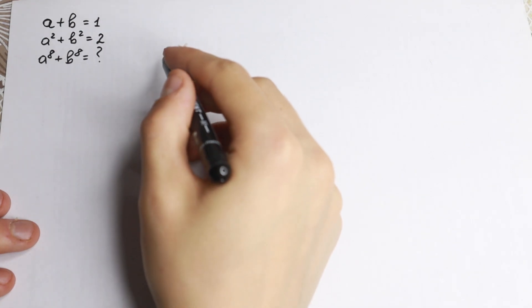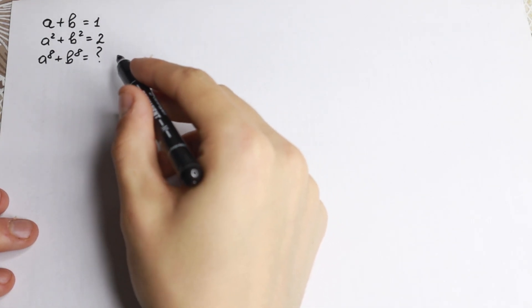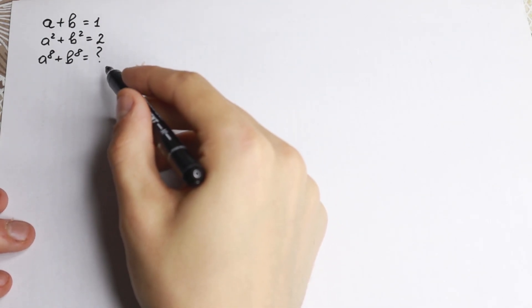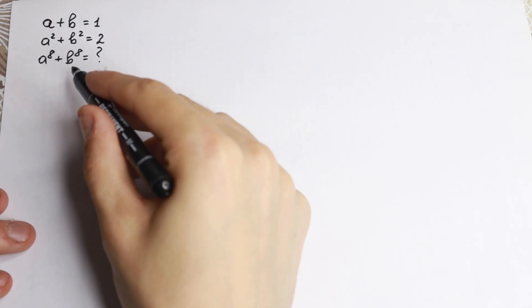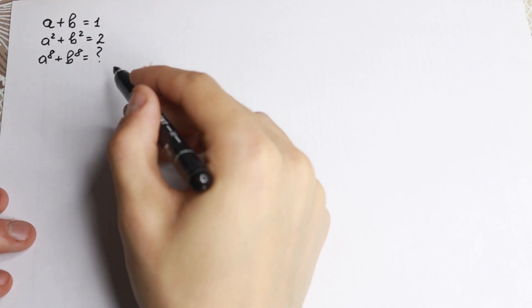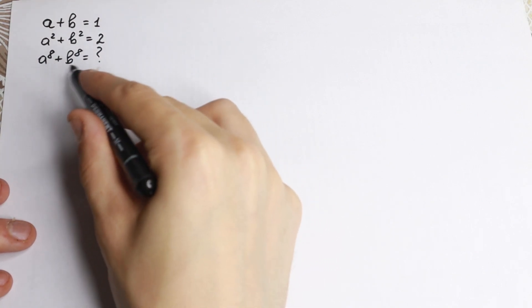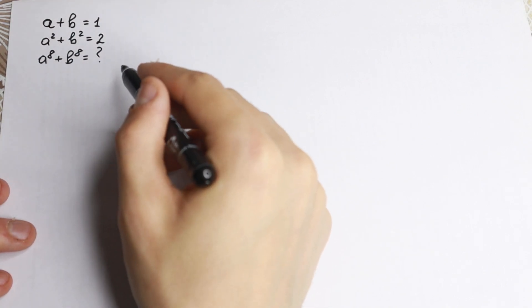Hello everyone and welcome back to High Mathematics. Today we have a really interesting math problem. We have a plus b equal to 1, a squared plus b squared equal to 2, and we need to find a to the 8th plus b to the 8th. This is the sum we need to find.